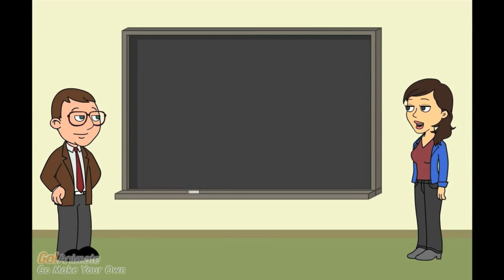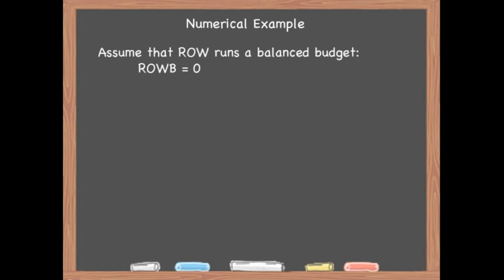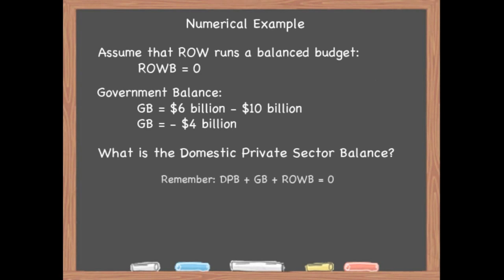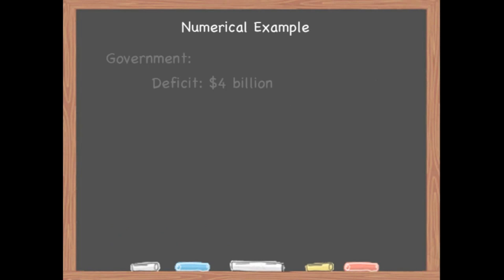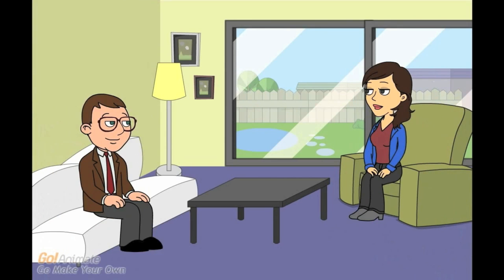Another option would be that both the government and rest of the world run deficits that together equal the domestic private sector's surplus. Let's go through a numerical example. To simplify things, let's assume the rest of the world runs a balanced budget. If the US government spends $10 billion and receives only $6 billion in revenues, what does this mean for the domestic private sector balance? It would have to mean the domestic private sector balance equals four — so if the government runs a deficit of $4 billion, the domestic private sector runs a surplus of $4 billion.